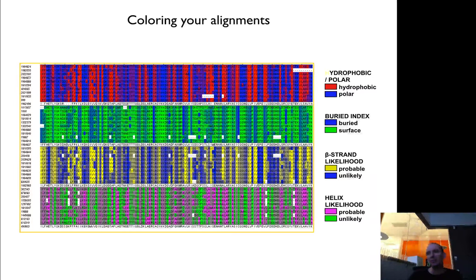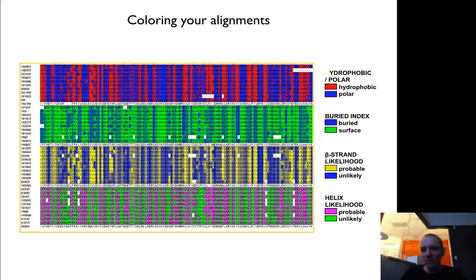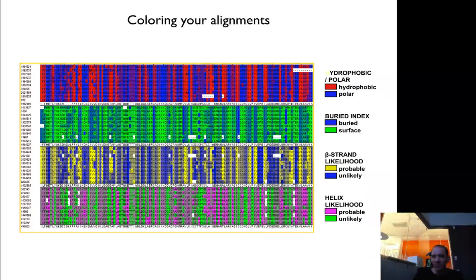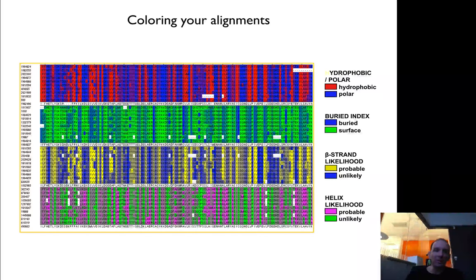And to find these things often, it's important to color your alignment in different ways. You can color it by polarity, some probability of being a beta strand or a helix, you can find these regions. So if you do that, you can identify patterns.